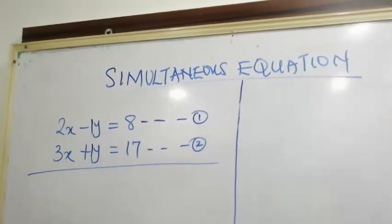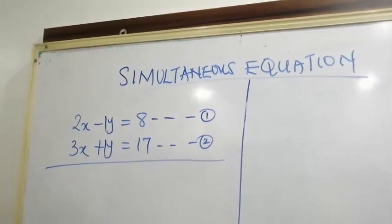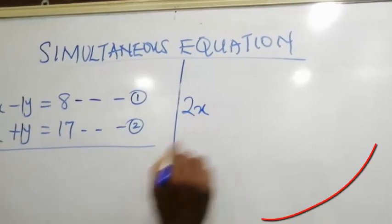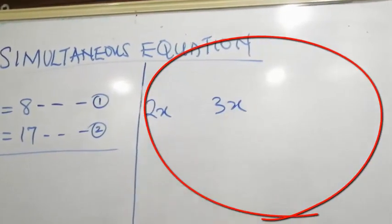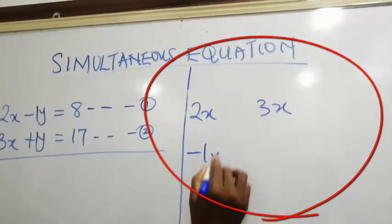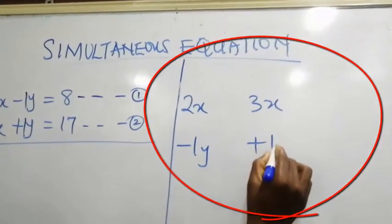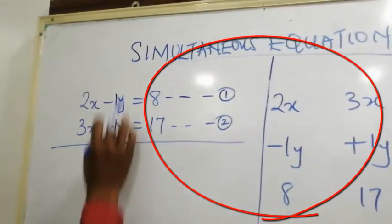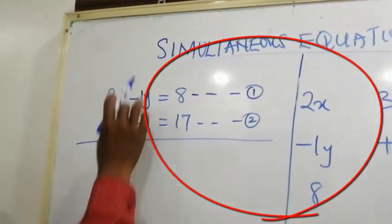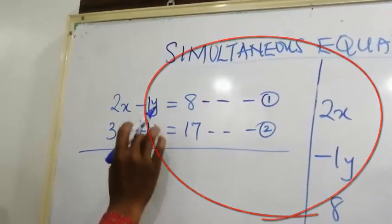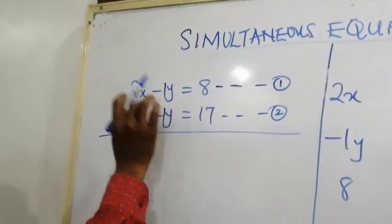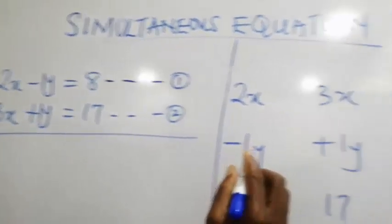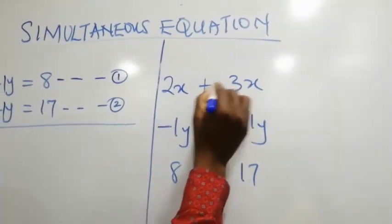We are looking at the sum of equation one and two. What are the elements inside the equation? It's 2x, 3x, minus 1y, plus 1y, 8, 17. Now, because at the point where we are going to eliminate, has different sign, which is plus and minus, the signs are different. So, we are going to add.